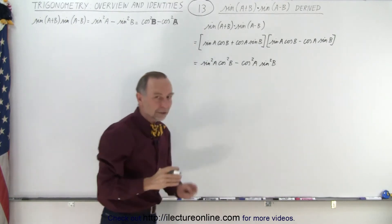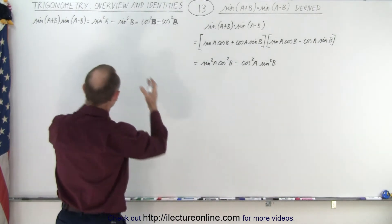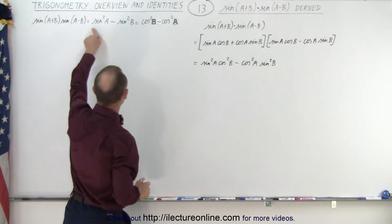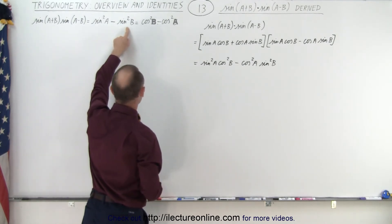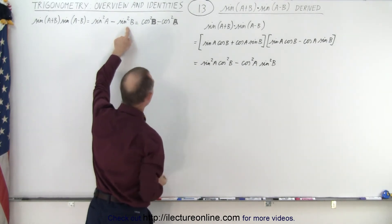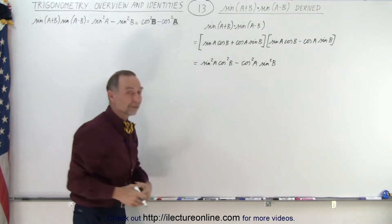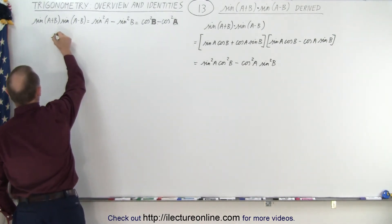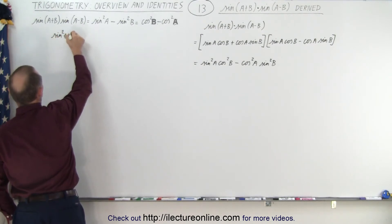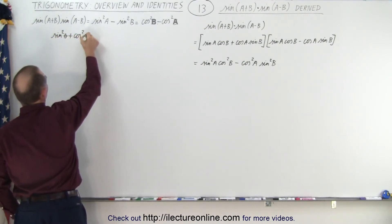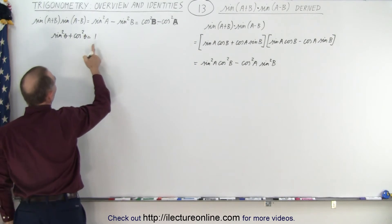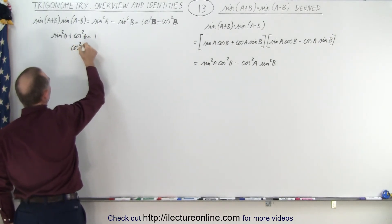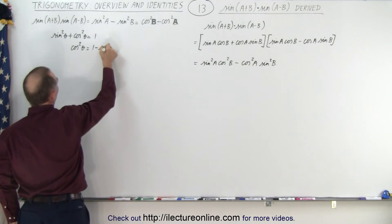Now we can diverge depending on which of the two forms you want. For the first identity in terms of sines, we need to get rid of the cosines. For the second form, we need to get rid of the sines. We'll use the Pythagorean identity: sine squared of an angle plus cosine squared of an angle equals 1, which means cosine squared of an angle equals 1 minus sine squared of that angle.